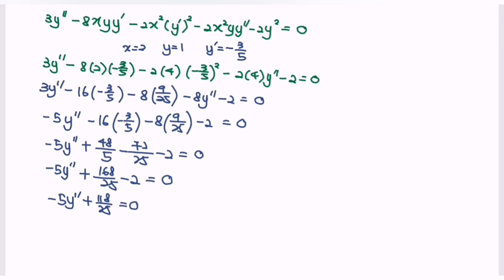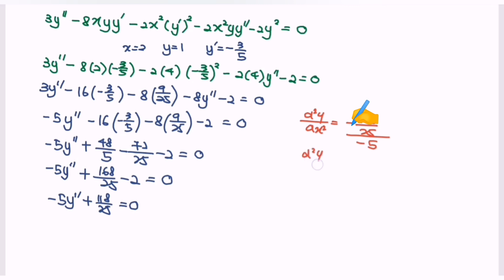So the second derivative is equal to 18 over 125.